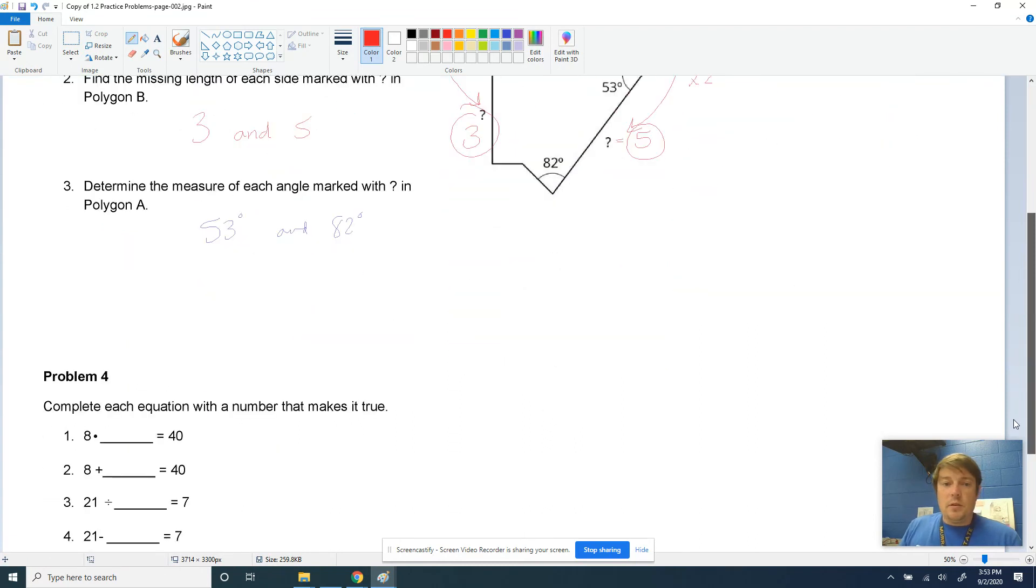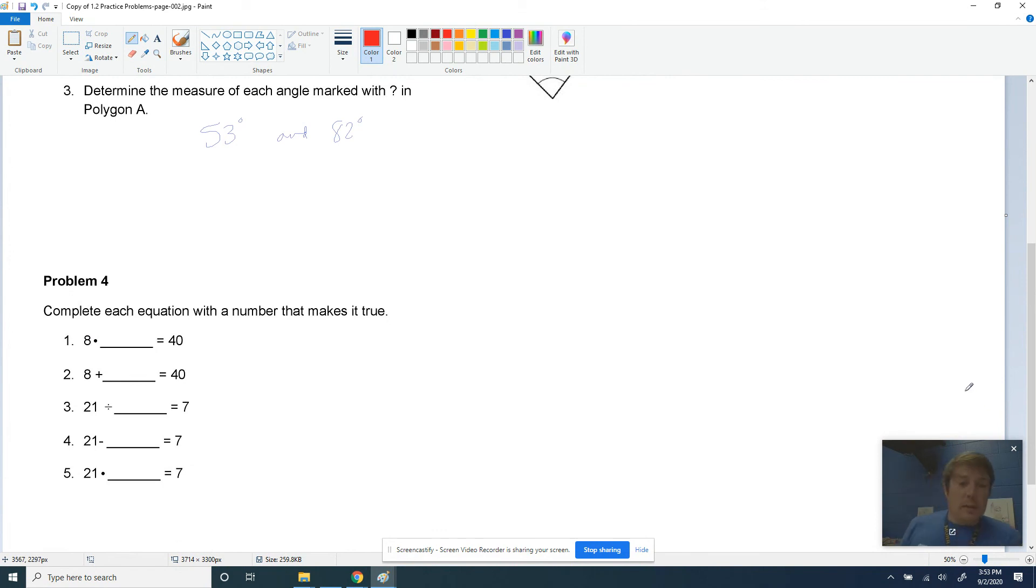And then last problem for this homework page, it wants us to complete these blanks. So 8 times what is 40? I think that's pretty simple. We know that times fact. And then 8 plus what is 40? That might be a little harder for you to do. Since you divide these two to find the number in the middle, it's the opposite of multiplying. What would you do with 40 and 8 to find the opposite of addition? You would do subtraction. So you would do 40 minus 8. And that gives you your answer, which is 32 that you'd put here.